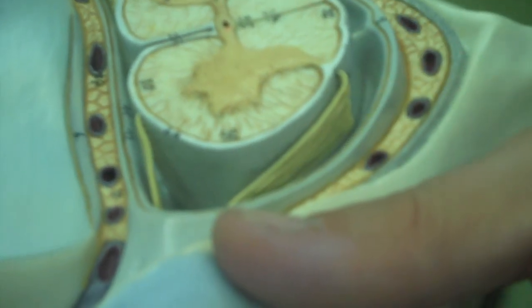On the dorsal side here, you'll see that there's the dorsal nerve roots. And these dorsal nerve roots contain sensory neurons.